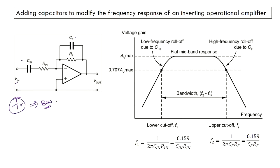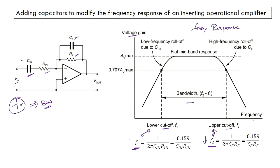By varying capacitor values Cin and Rf, and Cf and Rf, we can control the lower cutoff frequency f1 and upper cutoff frequency f2. Higher f2 and lower f1 gives maximum bandwidth. Choosing Cin and Cf carefully allows us to set the desired upper and lower cutoff frequencies.